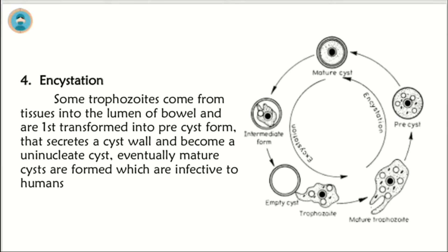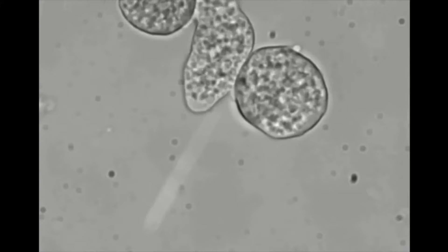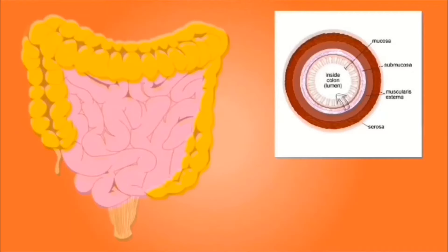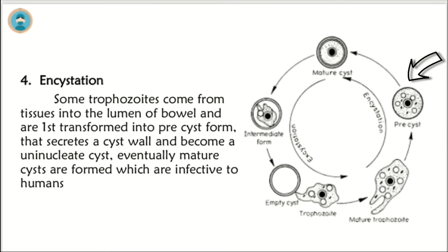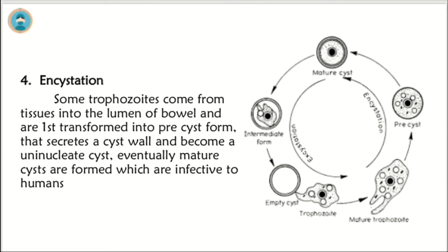Step 4 is encystation. Some trophozoites move from tissues into the lumen and are first transformed into a pre-cyst form that secretes a cyst wall and becomes a uninucleate cyst. Eventually, mature cysts are formed, which are infective to humans and are quadrinucleate.